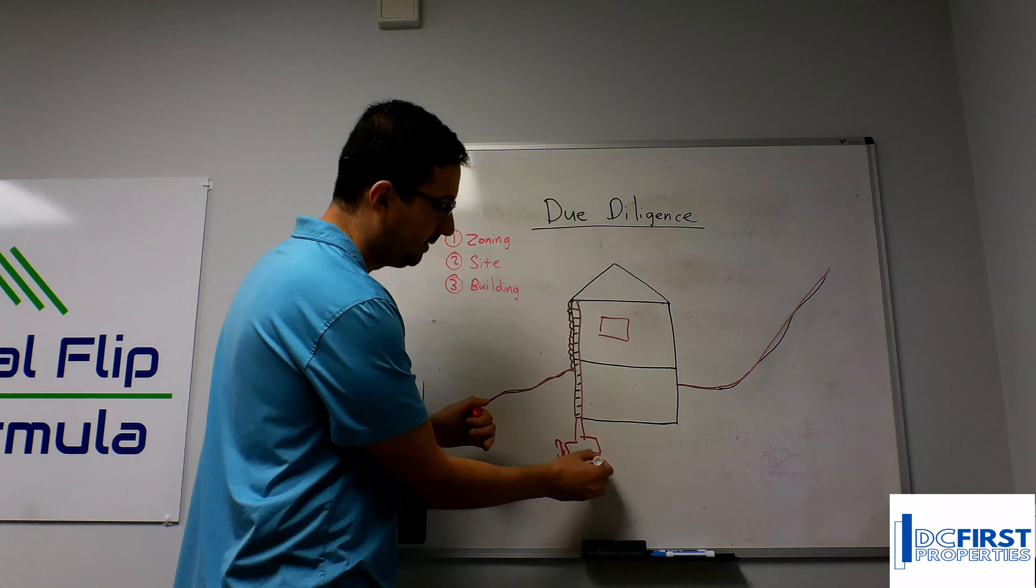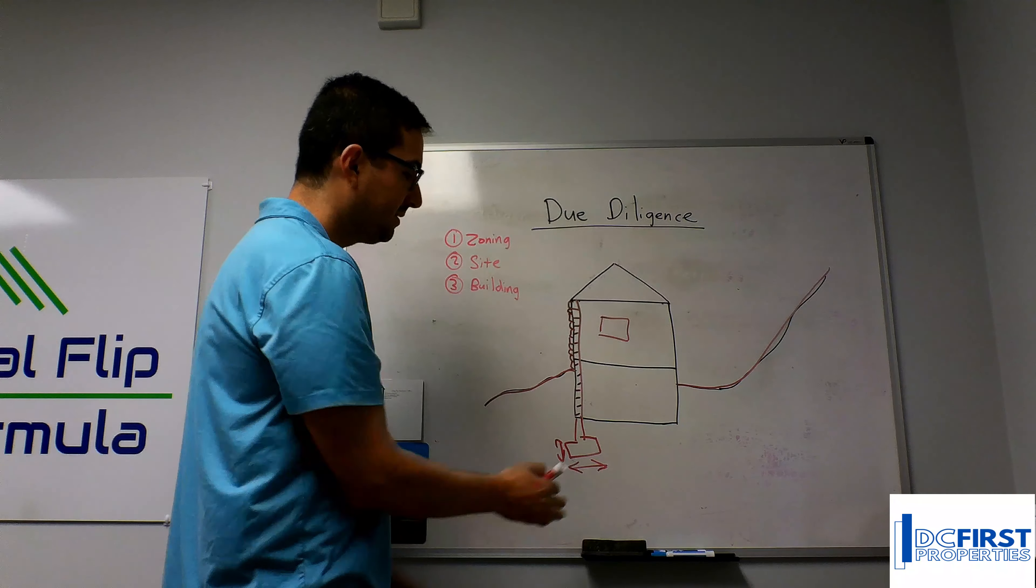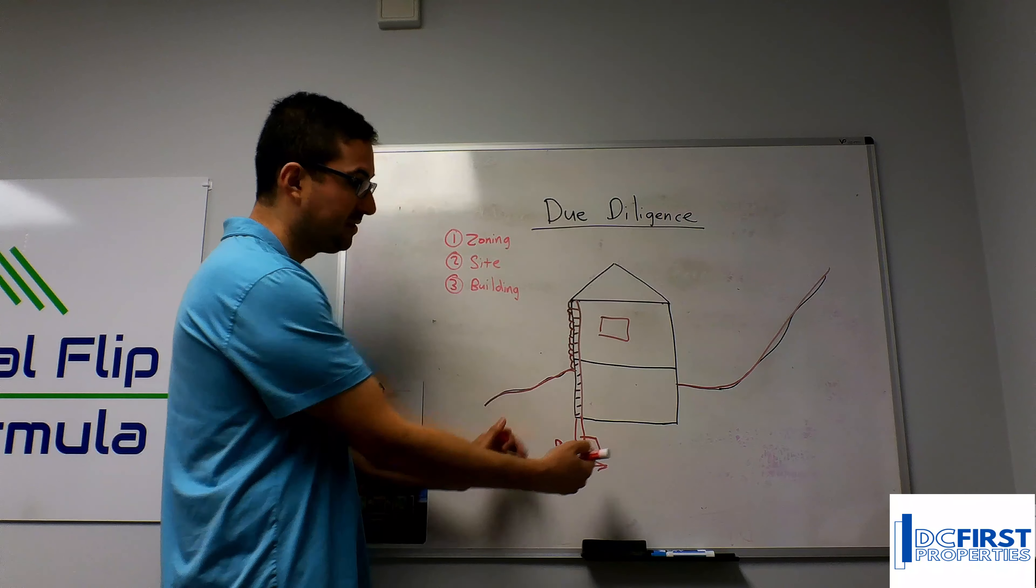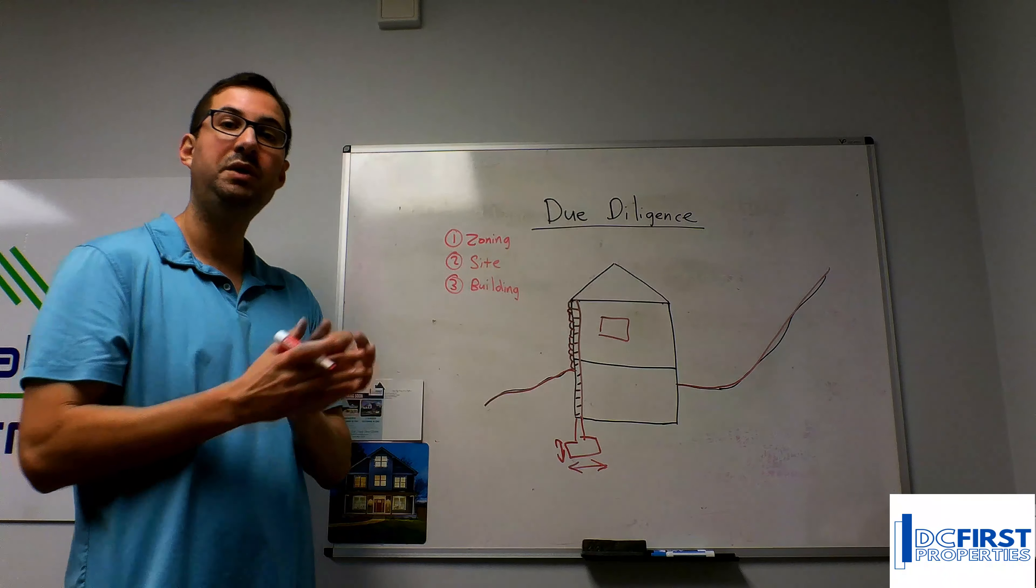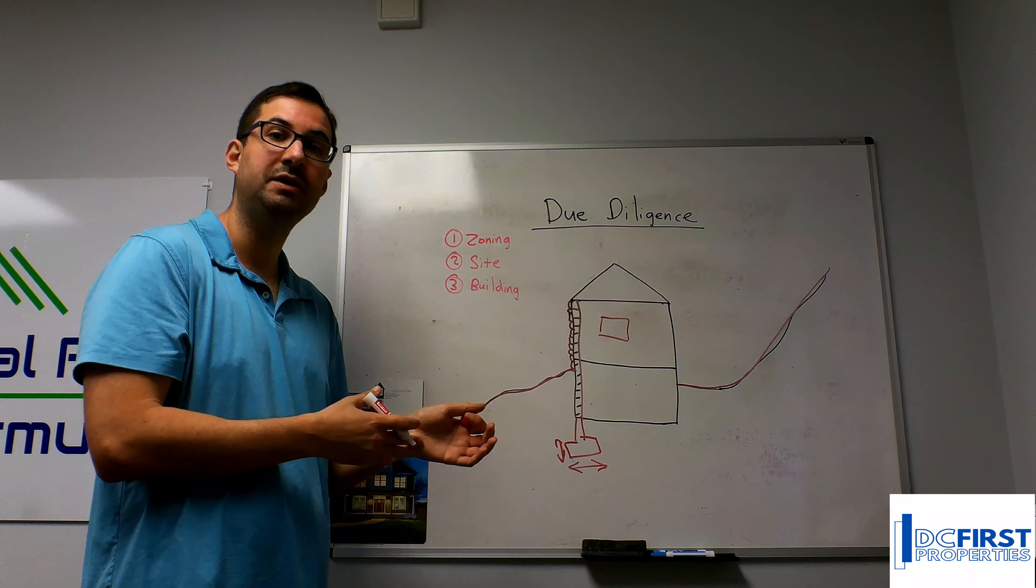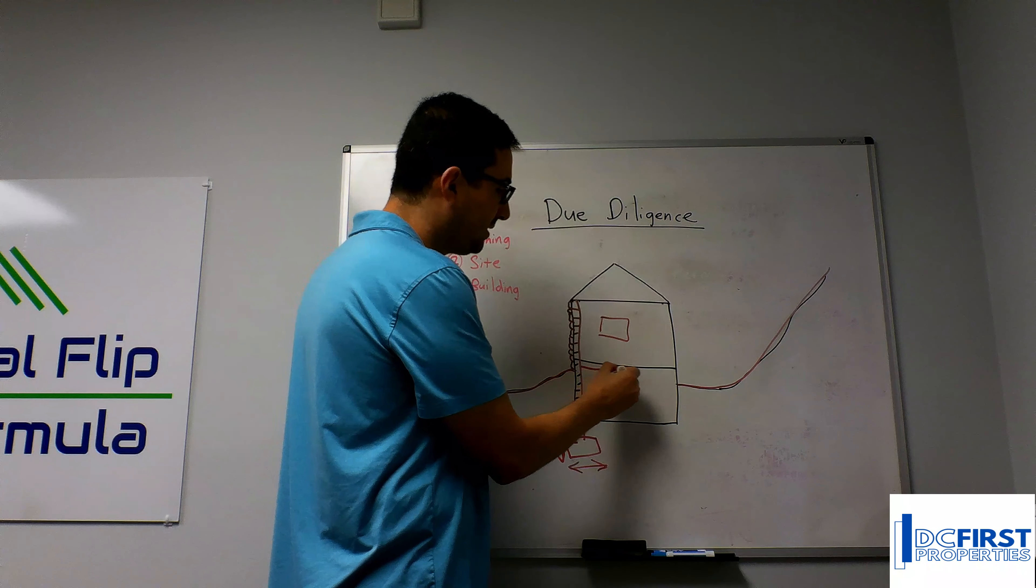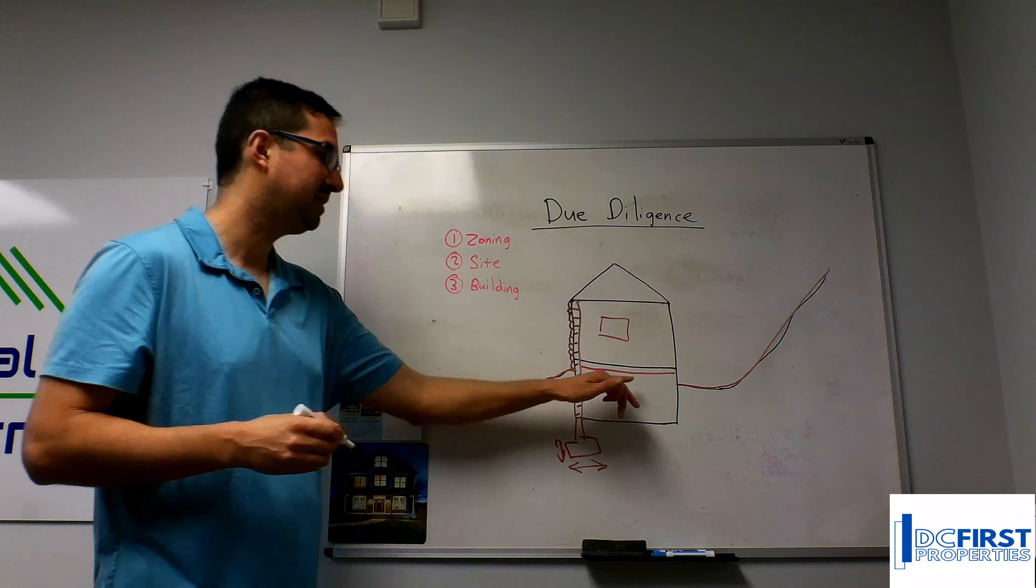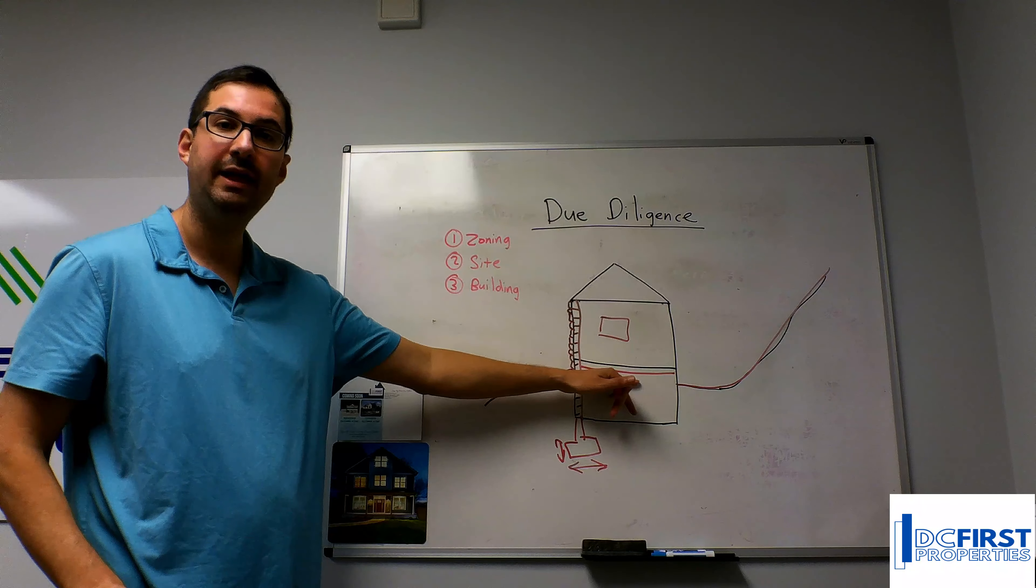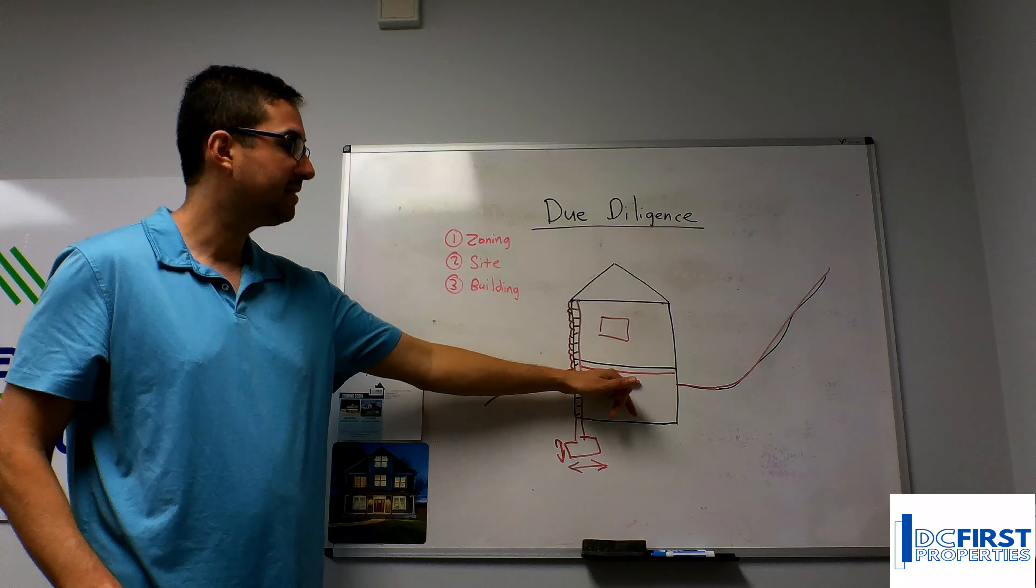The size of the existing footers will determine what you can build in the future on this property. The other things that you'll be looking at in depth are the existing structural elements. All these older houses have a steel beam running through the headroom of the basement.